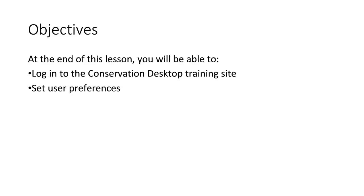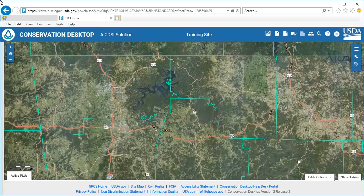At the end of this lesson, you will be able to log in to the Conservation Desktop training site and set your user preferences. Click on the link for the CD training site. You should be logged in automatically with your eAuthentication single sign-on.